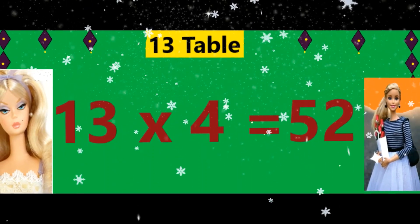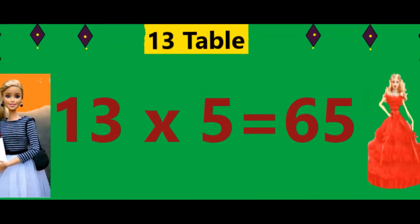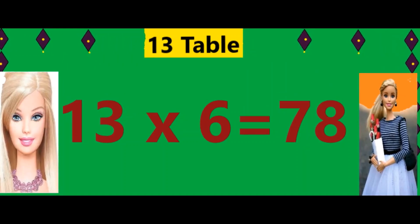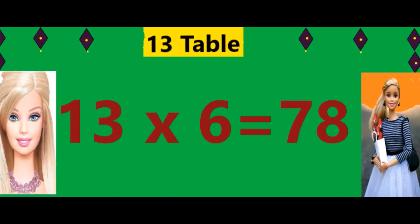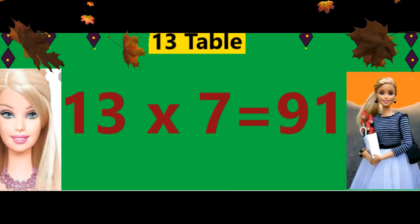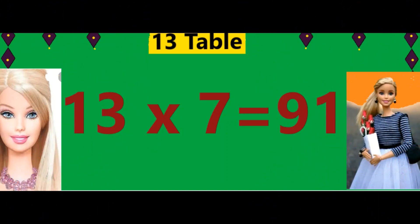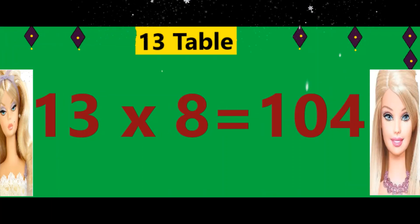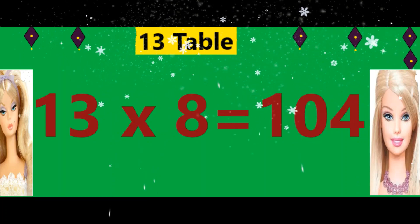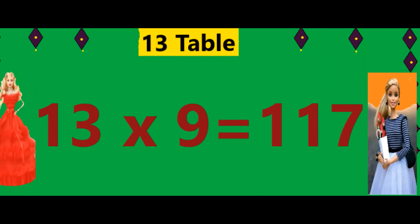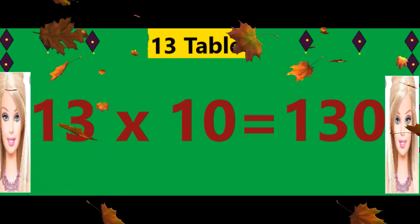Thirteen fives are sixty-five. Thirteen sixes are seventy-eight. Thirteen sevens are ninety-one. Thirteen eights are one hundred and four. Thirteen nines are one hundred and seventeen. Thirteen tens are one hundred and thirty.